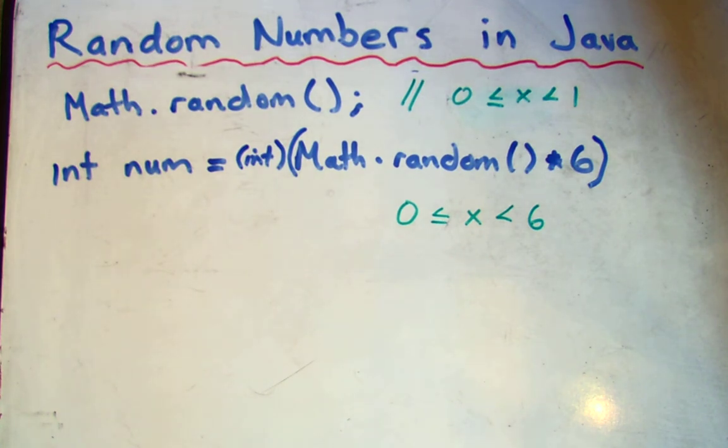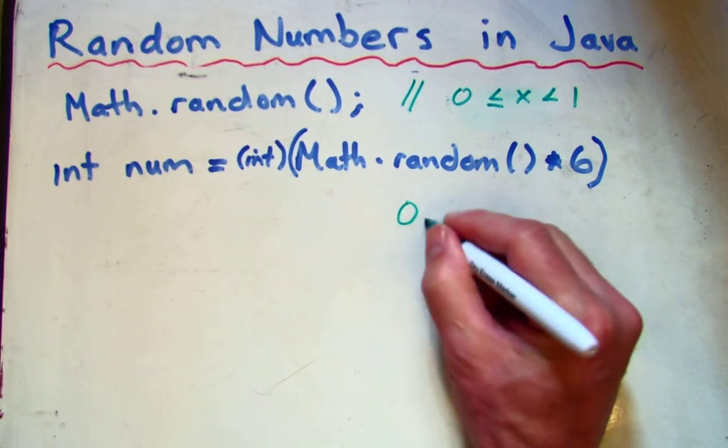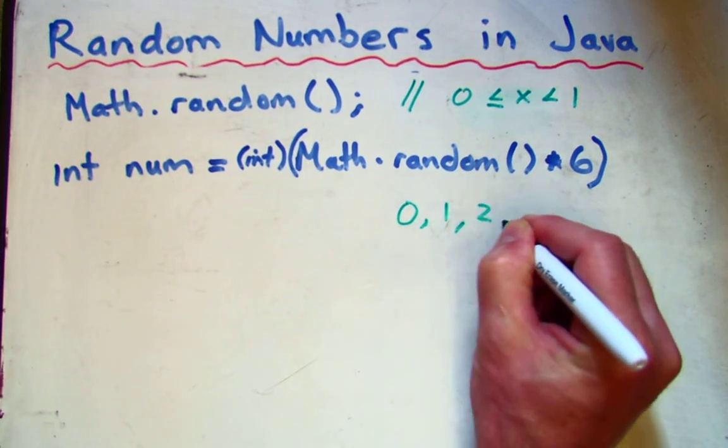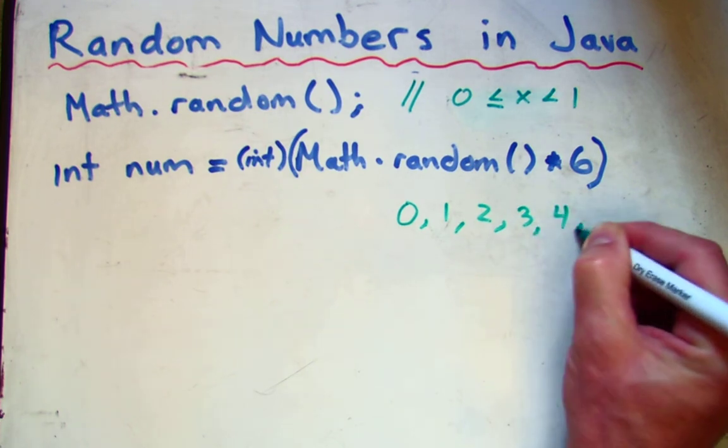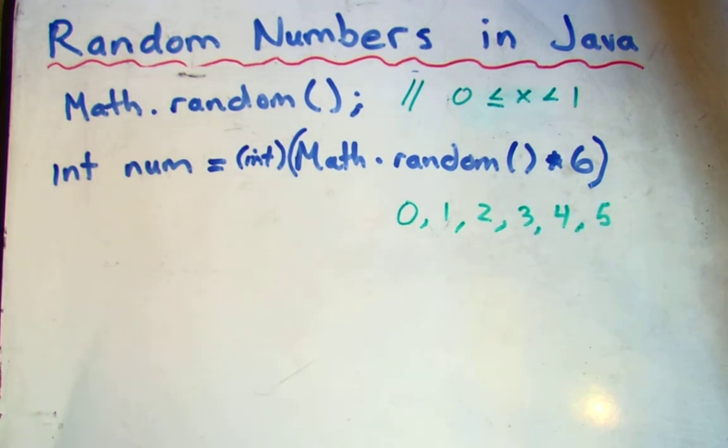So at the moment, this could possibly generate the numbers 0, it could be a 1, a 2, a 3, a 4, or a 5. Because every time, it's casting it to an integer.